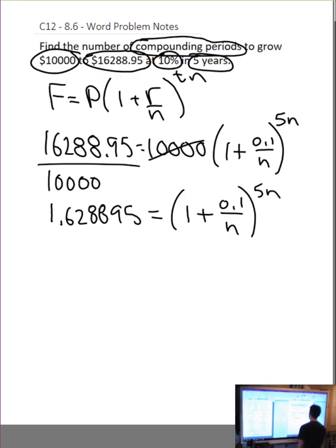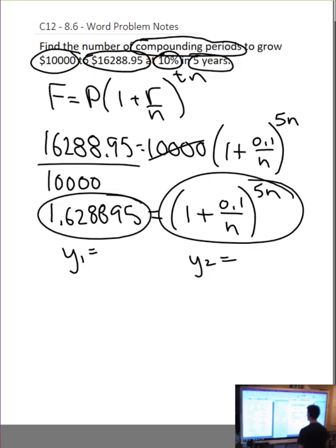So, I'm going to divide both sides by 10,000. And I'm going to get 1.628895 equals 1 plus 0.1 over n to the exponent 5n. Now, there is no possible way to solve this algebraically. So, we need to say y1 equals the left-hand side and y2 equals the right-hand side. We need to put it in our graphing calculator and find the intersection to solve for n. So, if I say y equals 1.628895 and open bracket 1 plus 0.1 divided by x close bracket to the exponent open bracket 5x close bracket.